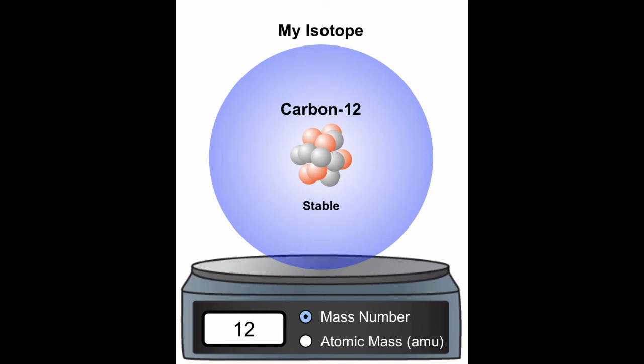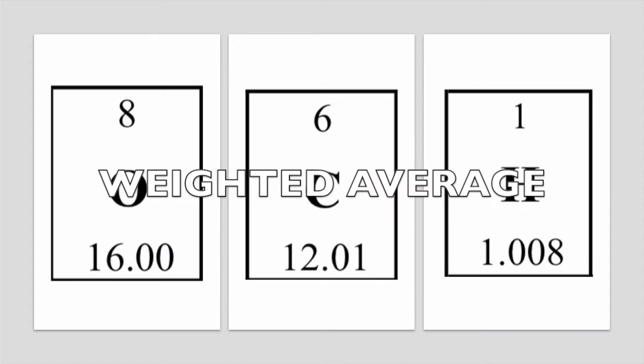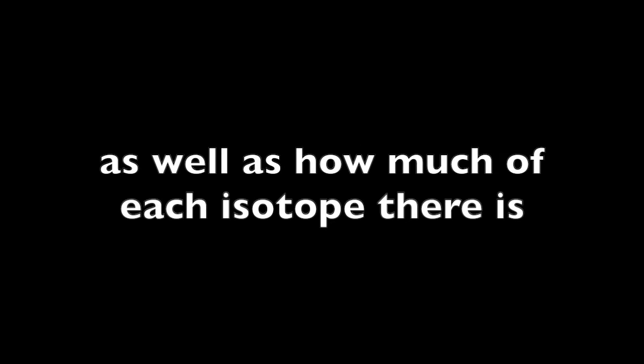The atomic mass reported in the periodic table is what we call a weighted average. And this means it accounts for the mass of each isotope as well as how much of each isotope there is.